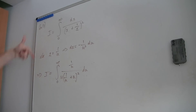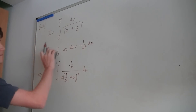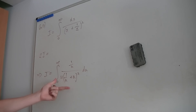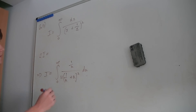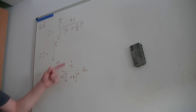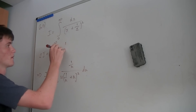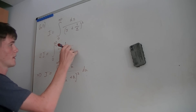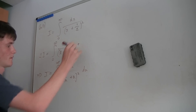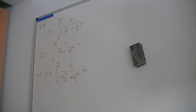Now I'm going to add this integral to the original, because both equal I. So 2I equals — and I'm going to change the u's to x's since that doesn't matter — and write this expression with 1 over x plus 1 over x squared.